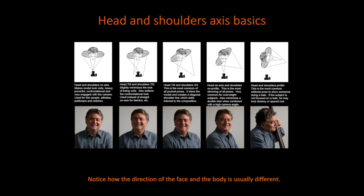The next one has the head at the seven-eighths pose and the shoulders at the three-quarter pose — this is the most common of all portrait poses. It slims the model and creates a diagonal shoulder line, which adds to the interest of the composition. Notice how one shoulder appears higher than the other; that adds interest and also slims down the subject.